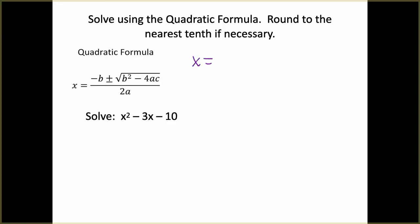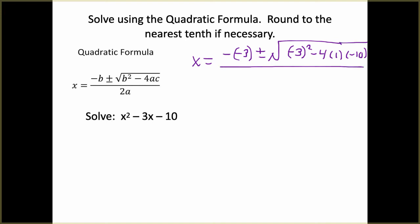x equals the opposite of b — so negative b becomes plus 3 — plus or minus the square root. The b is negative 3 squared, minus 4 times a, where a is 1, times c, where c is negative 10. All of this is divided by 2 times a, which is 2 times 1. I need to see that you are plugging in the a's, b's, and c's.